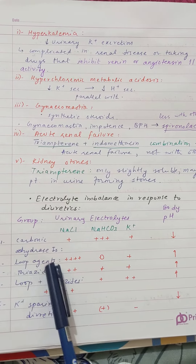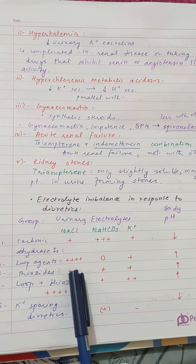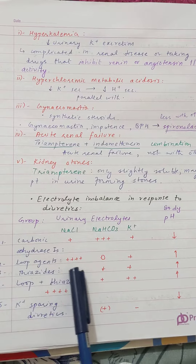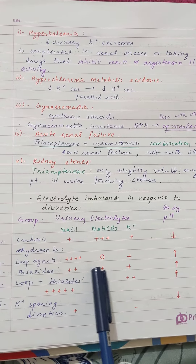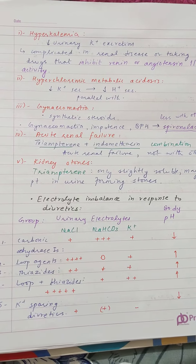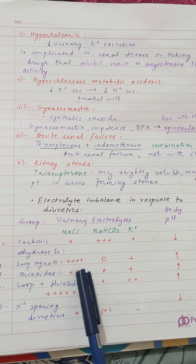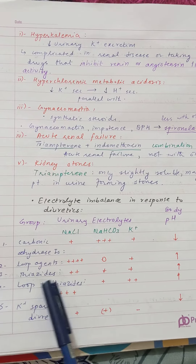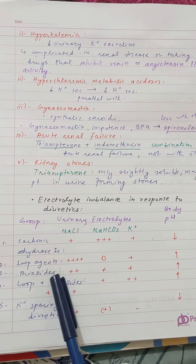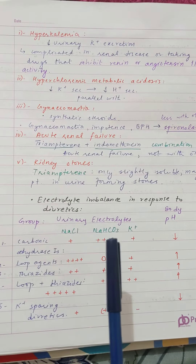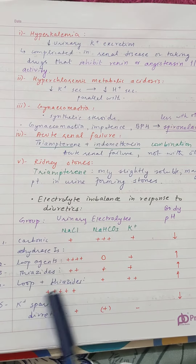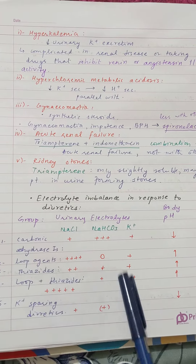In thiazide diuretics, NaCl excretion is mainly a significant excretion. The local excretion with bicarbonate and potassium is more than a big excretion. So NaCl urinary excretion — you need to know more excretion here. This is important.